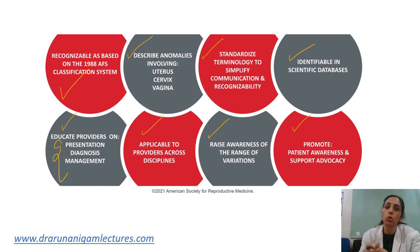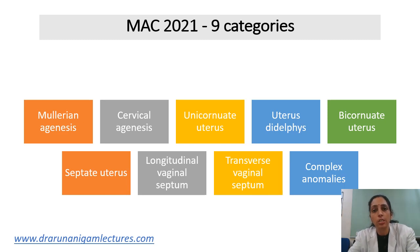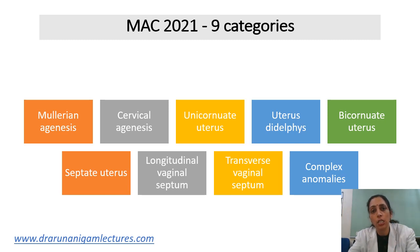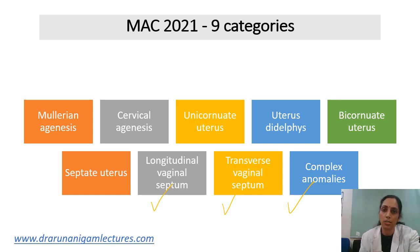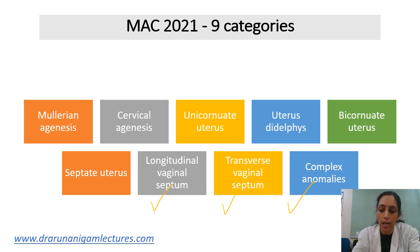In MAC 2021, anomalies have been categorized into nine classes. As seen in the past — in the AFS or ESHRE/ESGE classification — there were six categories. Now they have separately added three categories: longitudinal vaginal septum, transverse vaginal septum, and complex anomalies. So the major classification is divided into nine categories.